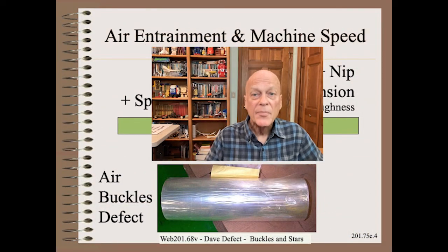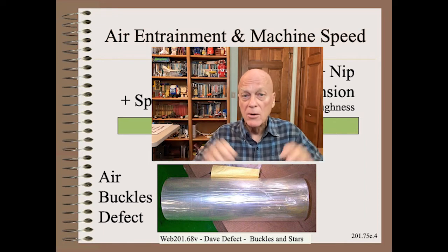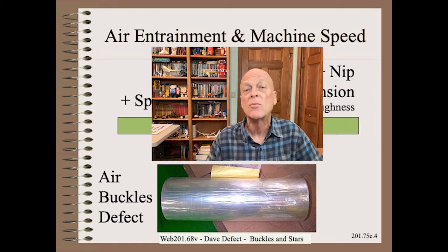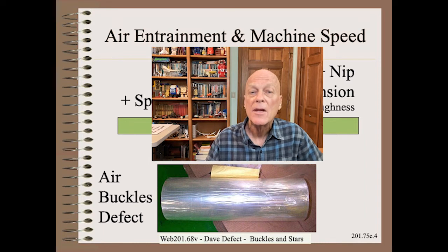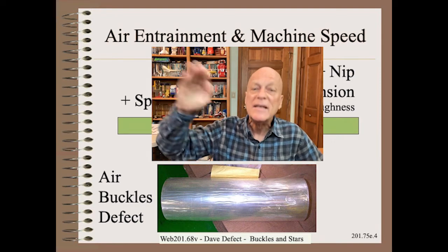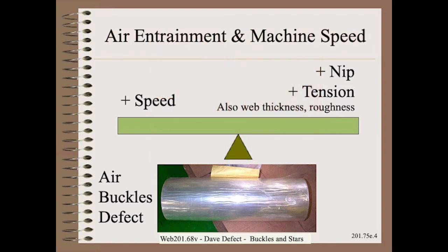In this first example let us suppose that we have a defect called air buckles. We cover that defect in my web 101 class and elsewhere in great detail. So we don't need to do that here. The boss wants you to speed up the machine and or decrease the frequency or severity of buckles.